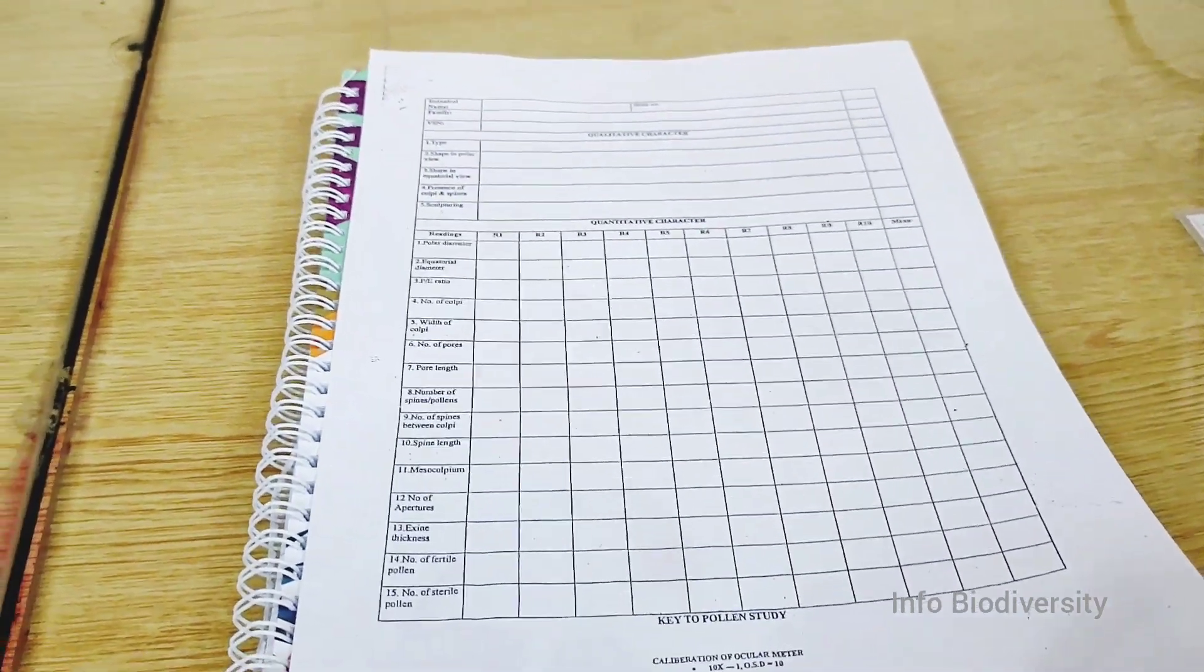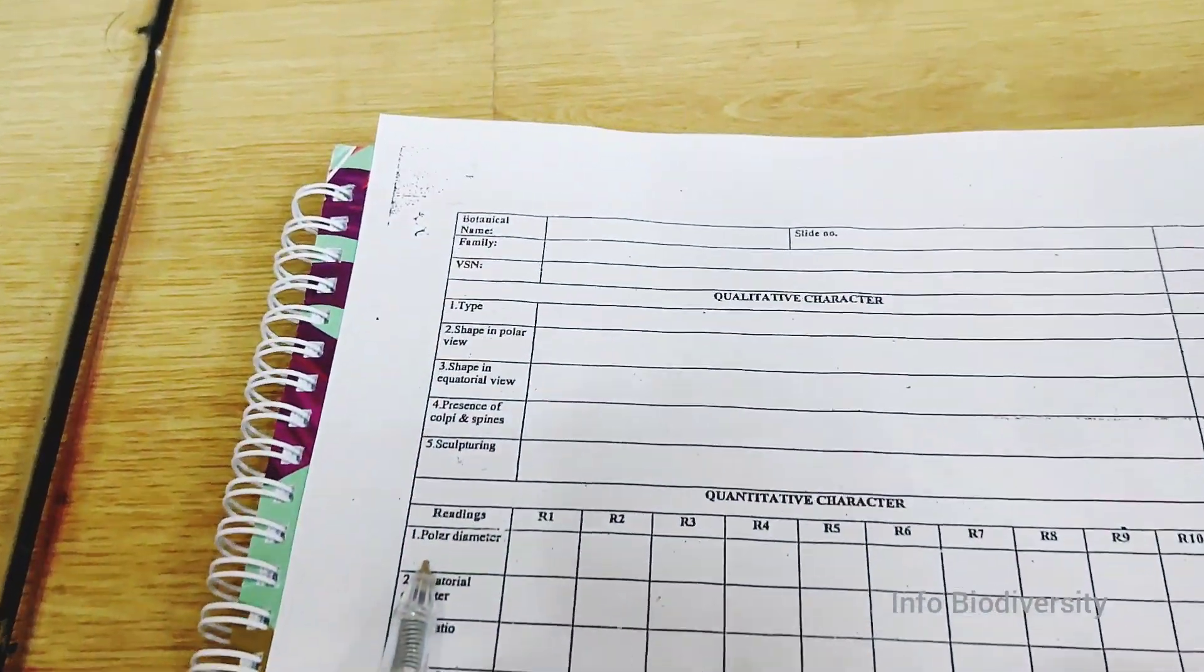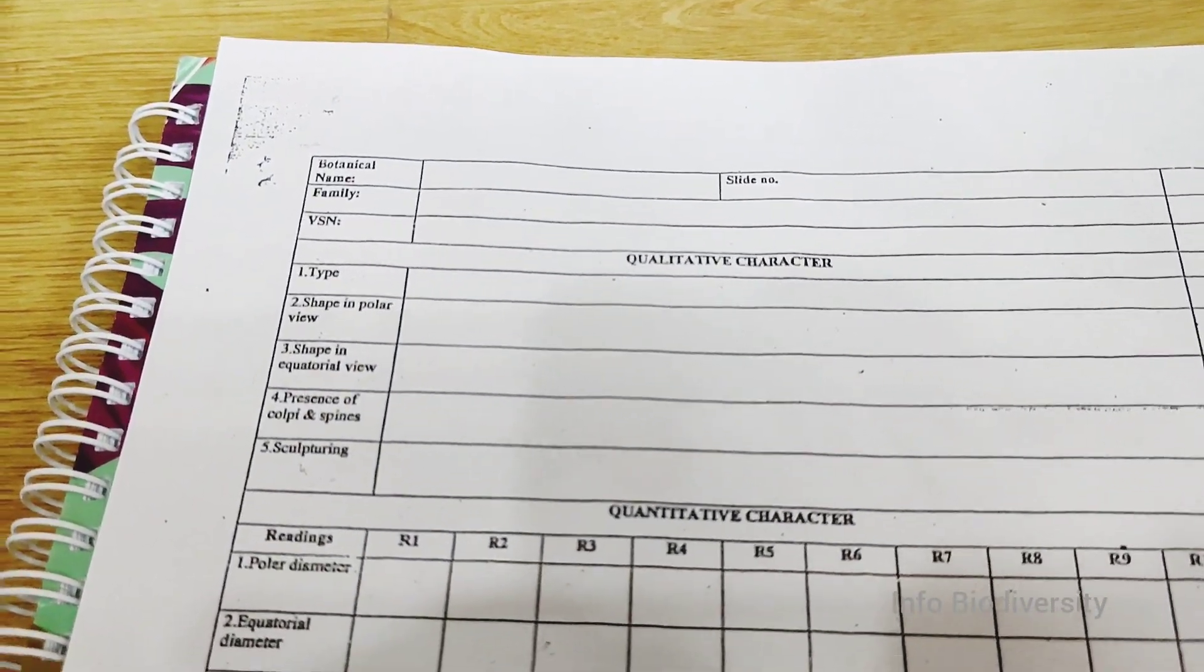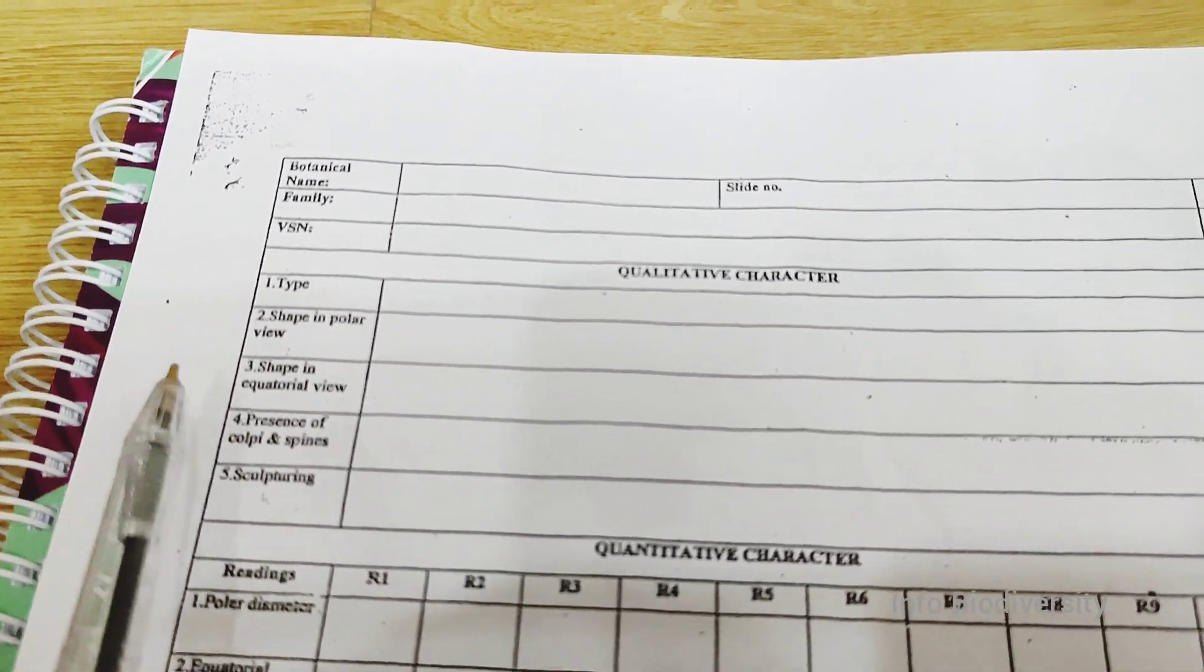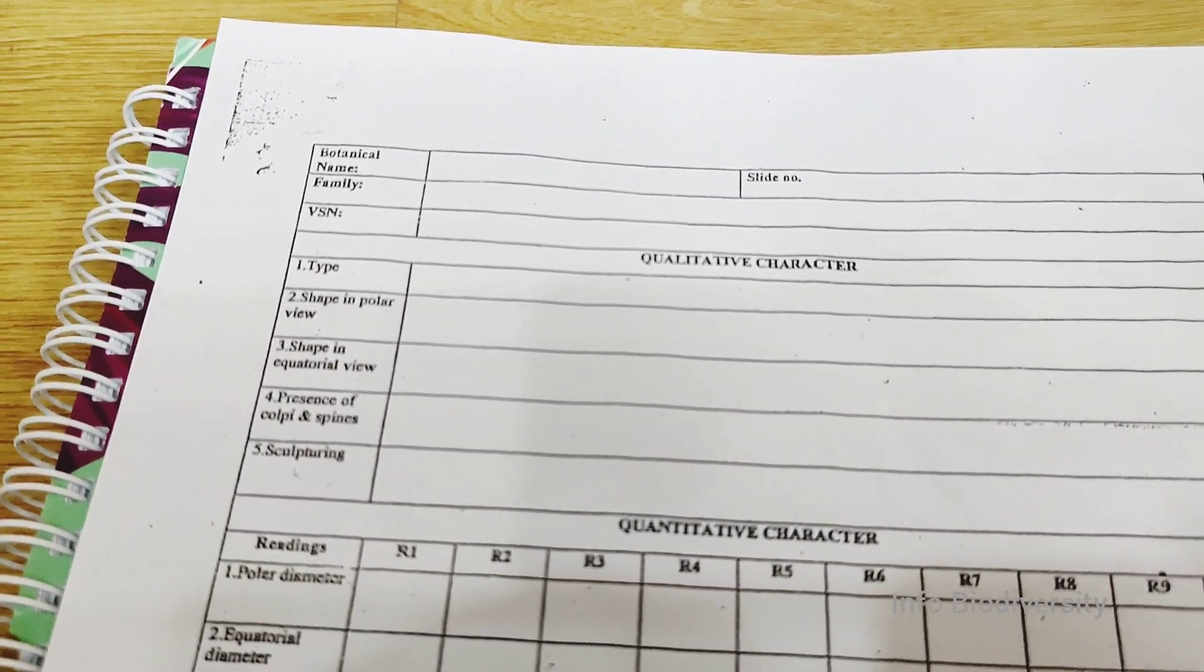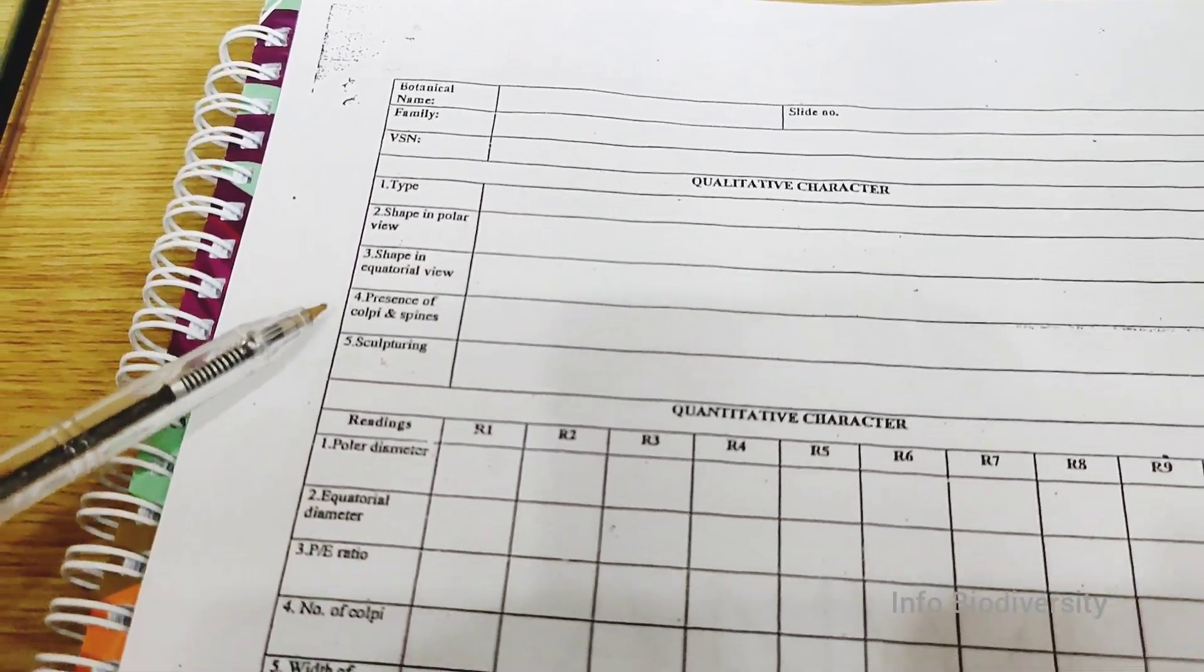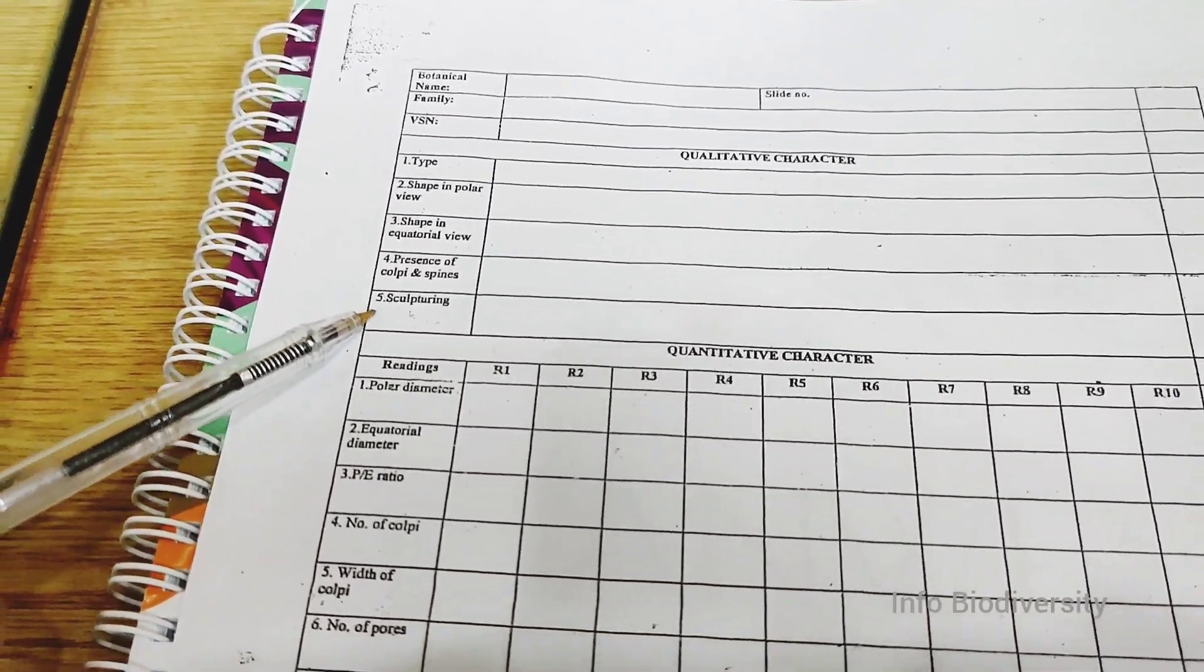This is the key that is used to study the pollen, to determine the qualitative and quantitative characters of the pollens. The qualitative characters include the name of the plant, the type of the pollen, shape in polar view, shape in equatorial view, the presence of colpi, and sculpturing—the general surface of the pollen.